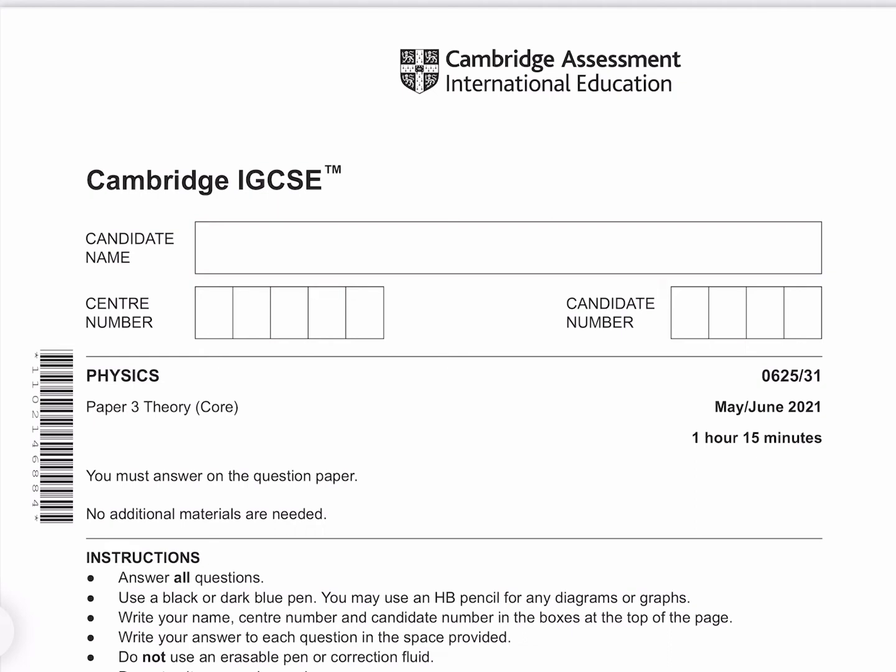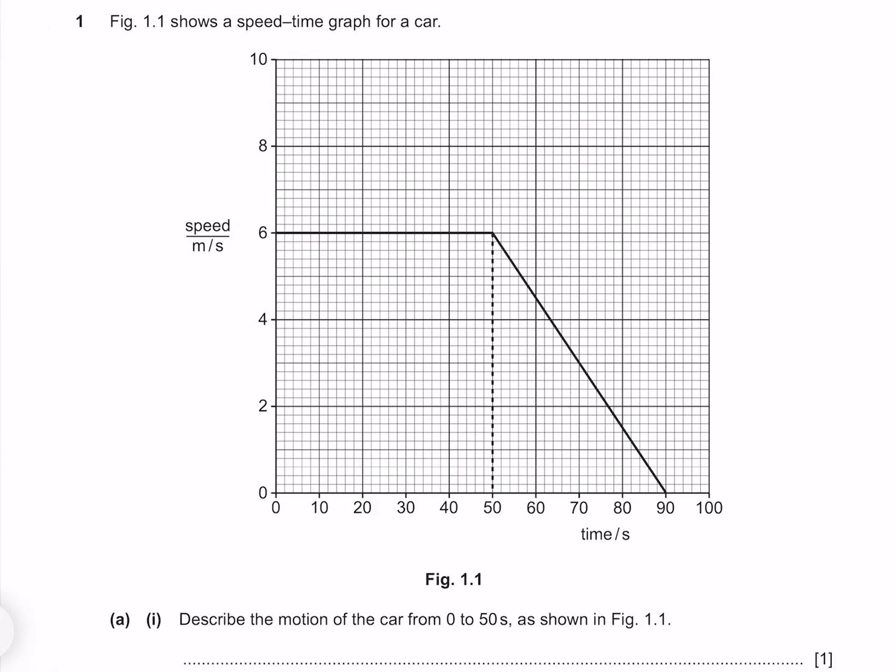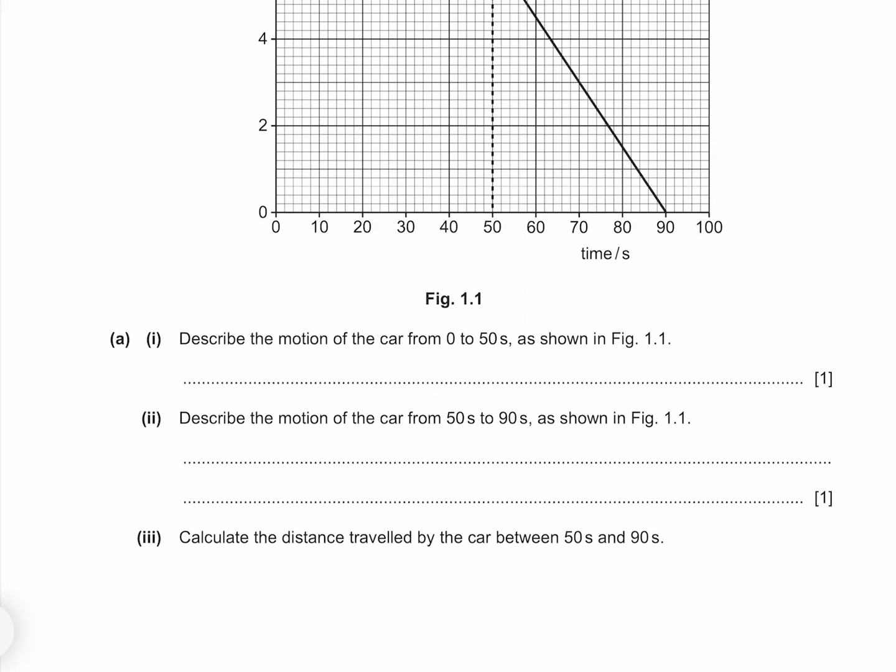In this video I'll be going through the 2021 May-June IGCSE Physics Theory core paper. Figure 1.1 shows a speed-time graph for a car. Describe the motion of the car from 0 to 50 seconds as shown in figure 1.1.